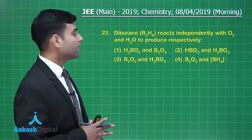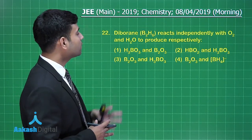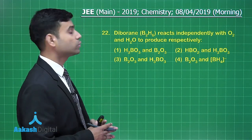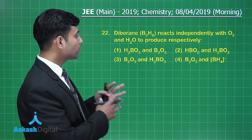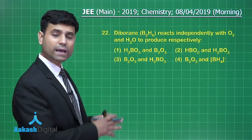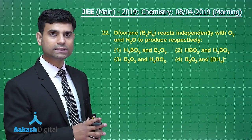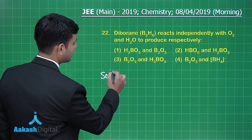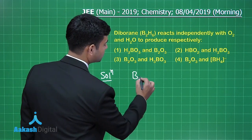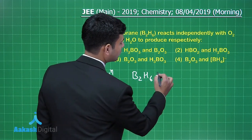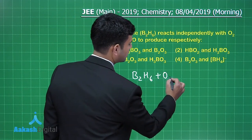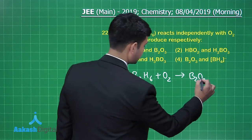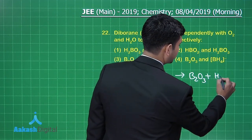This is the next question: diborane B2H6 reacts independently with O2 and H2O to produce respectively. We have four options. When diborane B2H6 reacts with oxygen, it gives us B2O3 plus H2O.